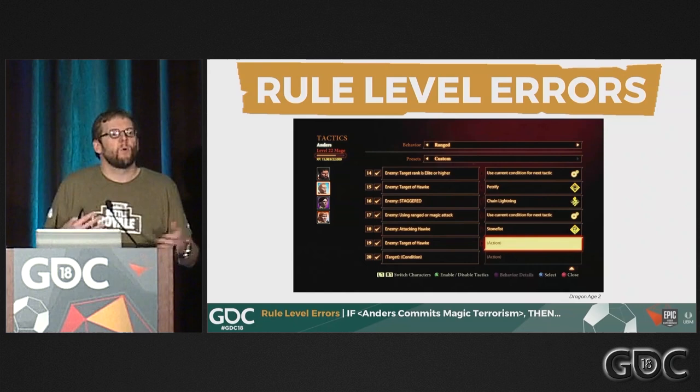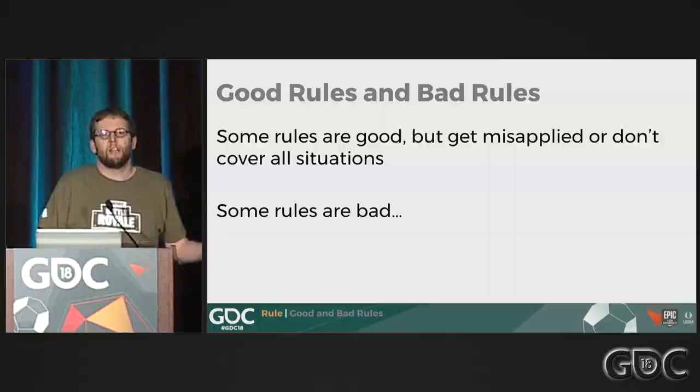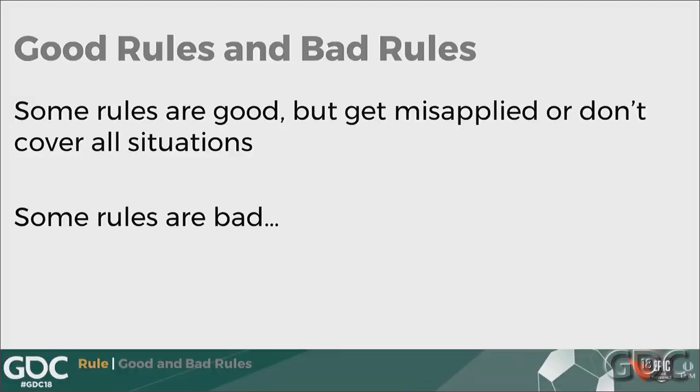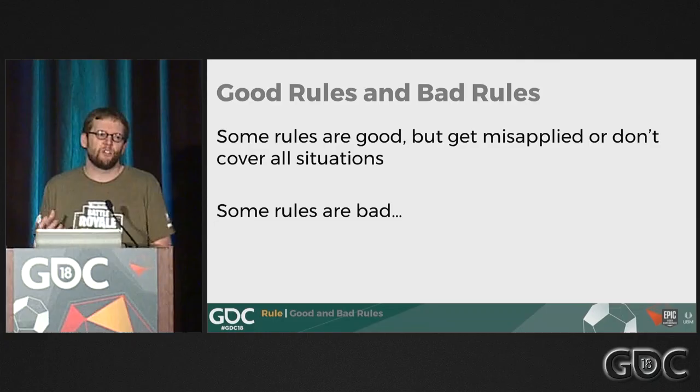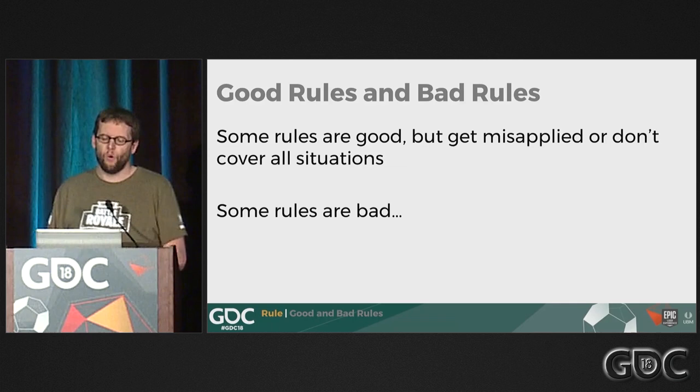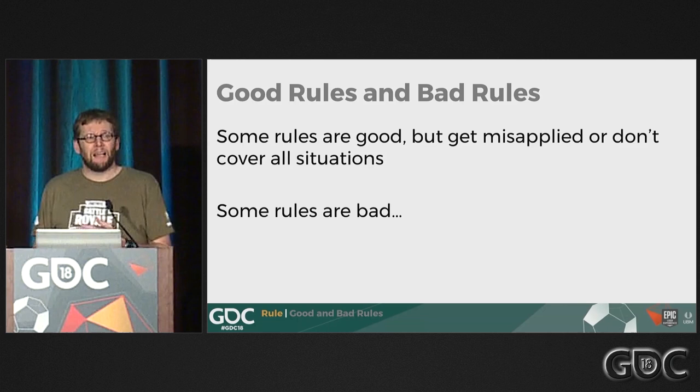There are two types of errors here. One is mistakes caused by good rules — rules that generally work in most situations but then you encounter a situation where the rule wasn't appropriate. The other is if you've formed a bad rule, because something was poorly explained or miscommunicated, and the if-then rule you've formed is just inappropriate.